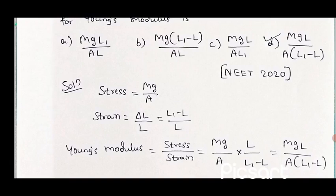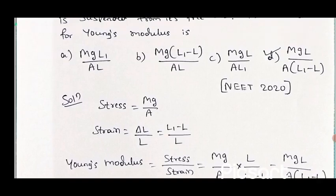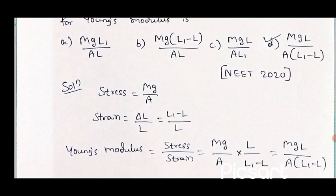Young's modulus equals stress by strain. Stress is Mg by A, and strain is (L1 minus L) by L — this comes in the denominator. After interchanging, the final expression becomes MgL divided by A into (L1 minus L). So the correct answer is the fourth option: MgL divided by A(L1 minus L).